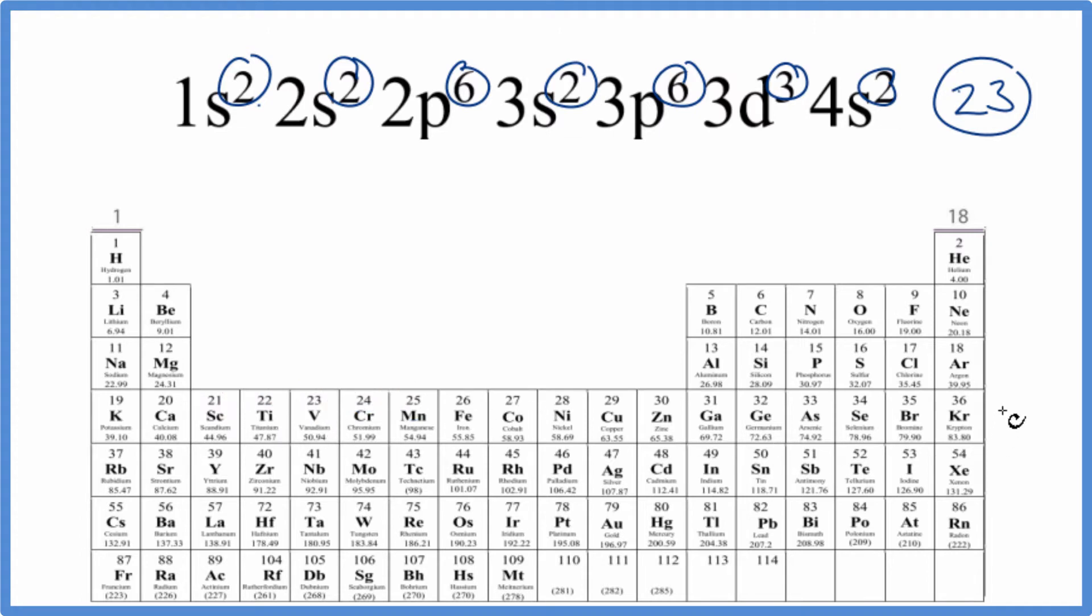And since all of the elements here on the periodic table are neutral, they don't have a negative or a positive sign after them, that means the number of protons, the atomic number, equals the number of electrons. So we just find atomic number 23, that is right here, vanadium.